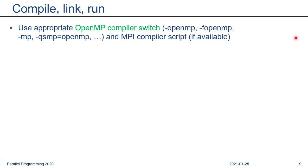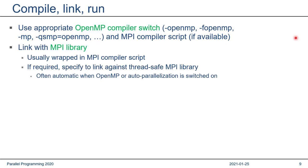To compile and link, you need to activate OpenMP in the compiler with the appropriate switch — minus-openmp or minus-fopenmp, depending on your compiler — and use the appropriate MPI compiler wrapper script. The MPI compiler wrapper takes care of finding necessary header files and libraries. A good software environment will automatically link a thread-safe MPI library whenever you activate OpenMP with the MPI compiler script.